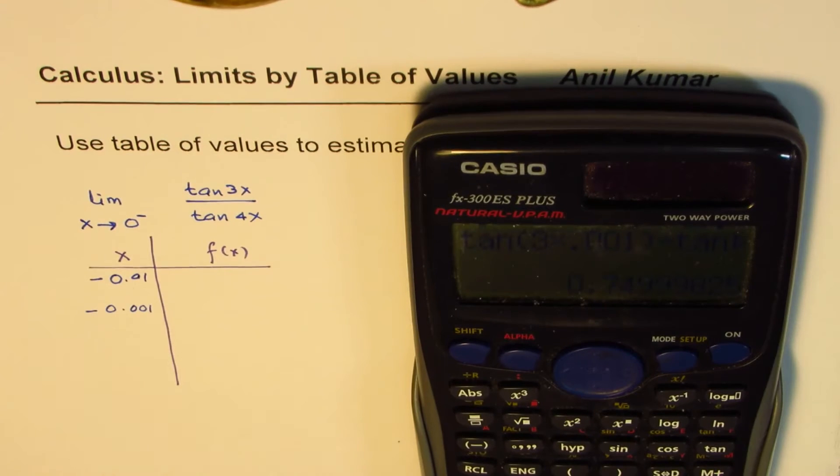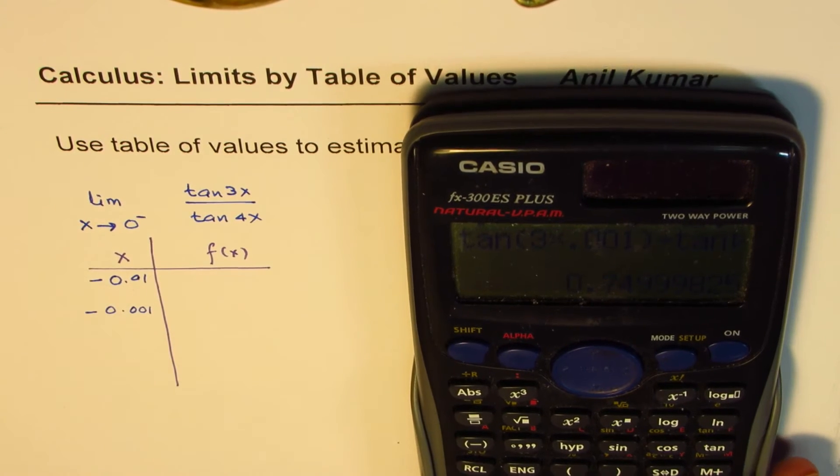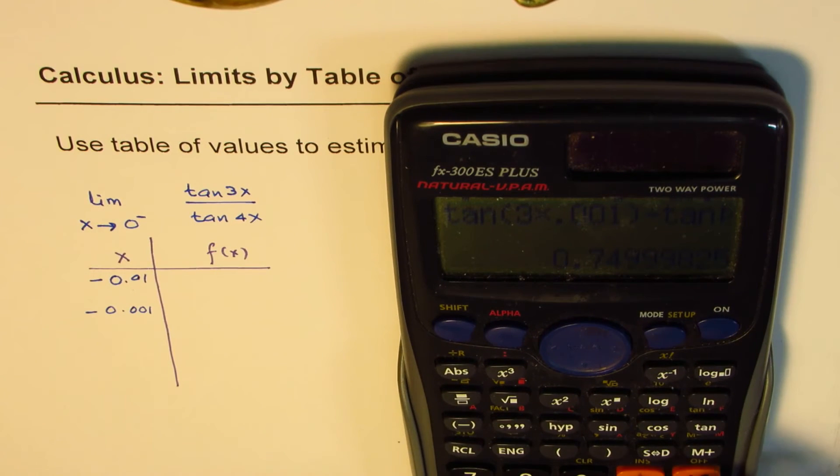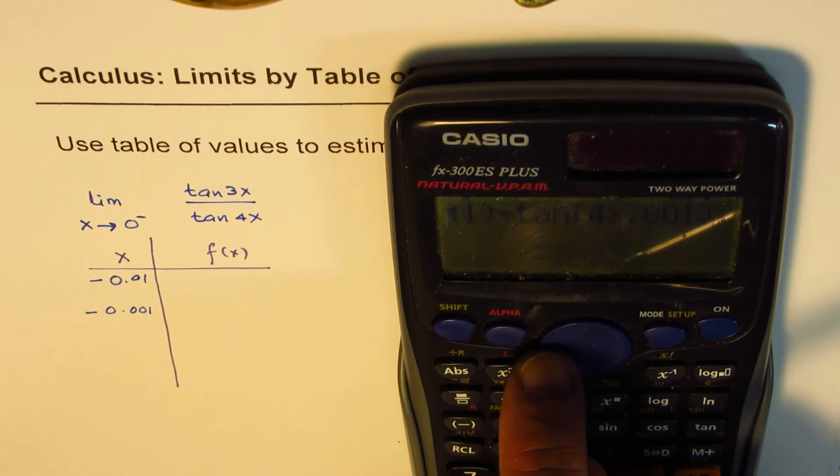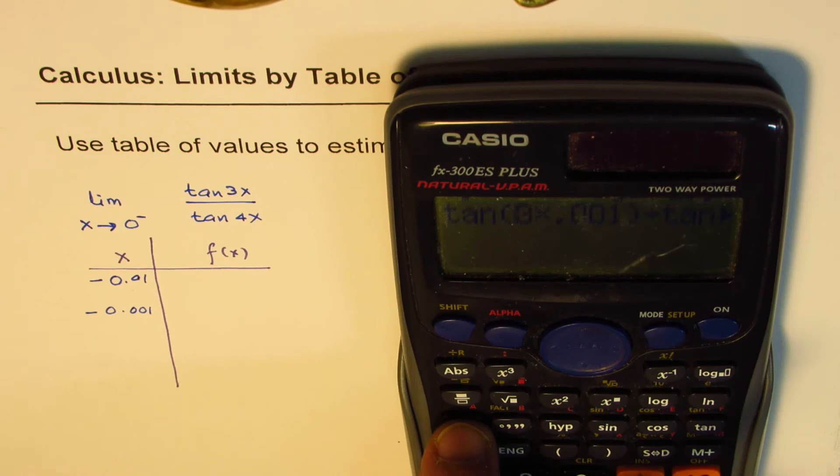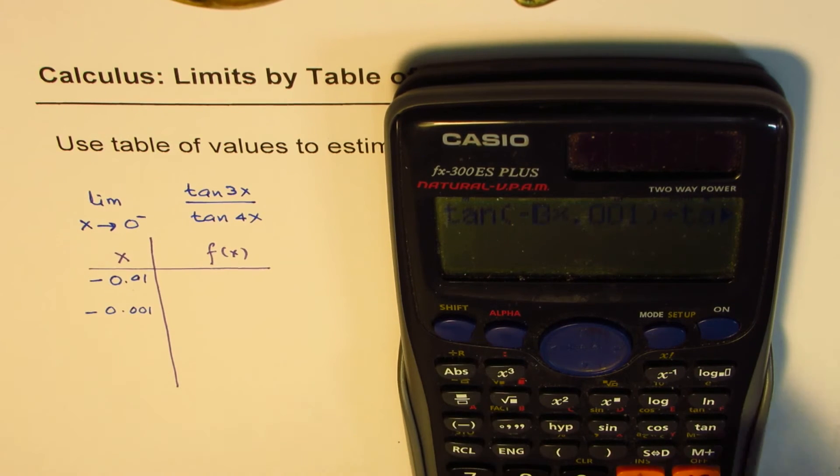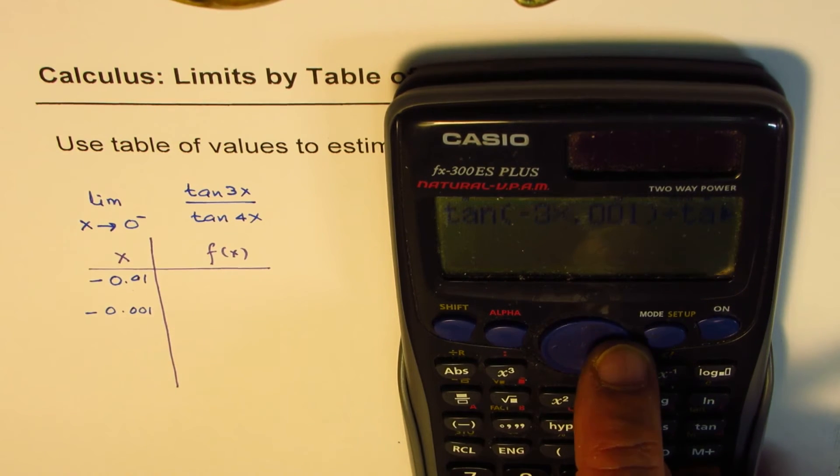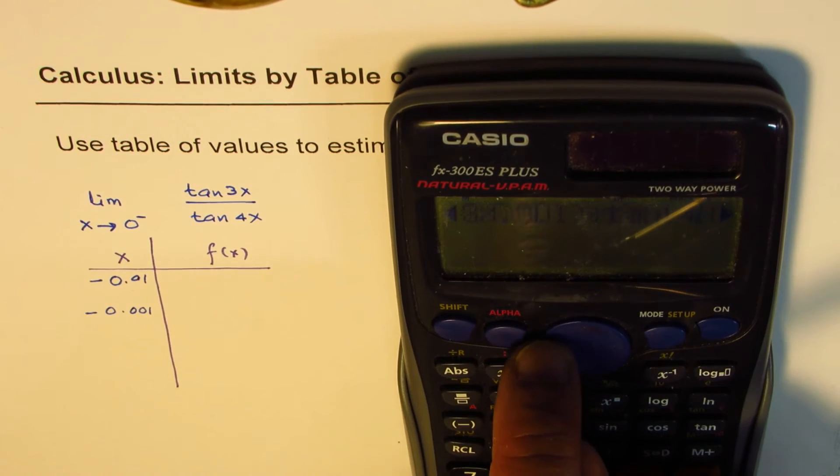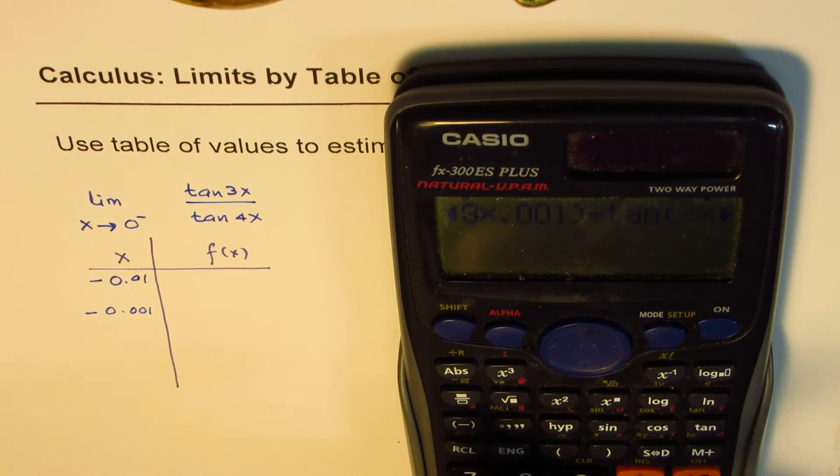We can do the same calculations for the function when we are approaching 0 from the negative side. So let's calculate this value now. So we'll change the value for the function as minus this time. So it's better to write minus first. And let's use minus 0.001. You can find the other values and complete the table. That's the whole idea.